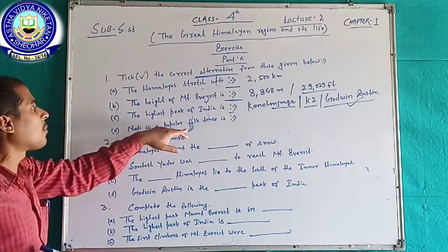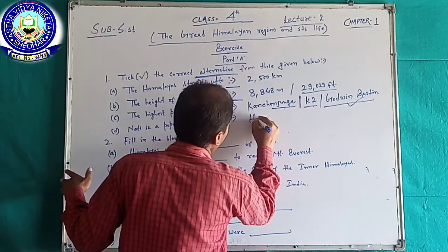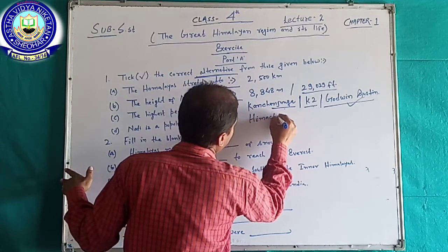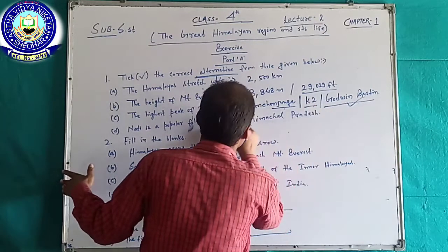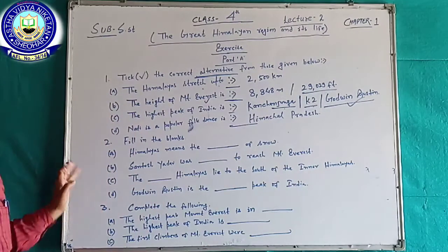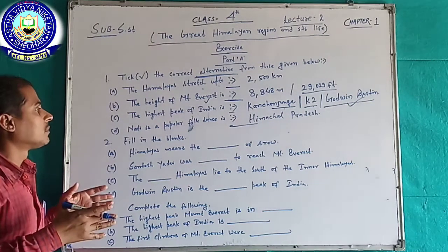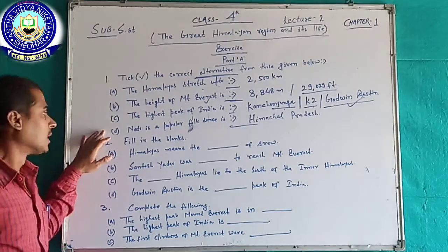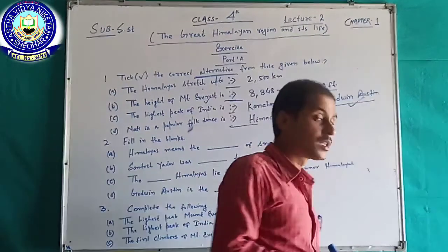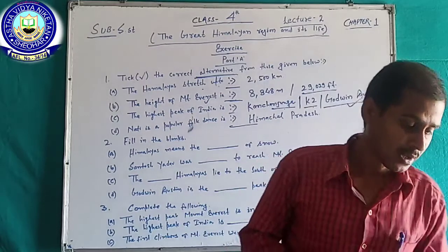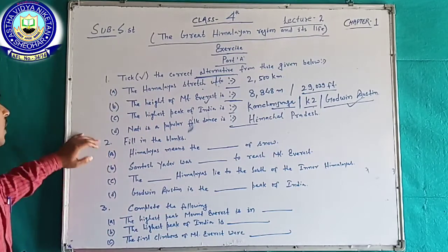Now your fourth question: Nati is a popular folk dance — its answer is Himachal Pradesh. Himachal Pradesh is one of the most beautiful states, and it lies to the south of Jammu and Kashmir in India.